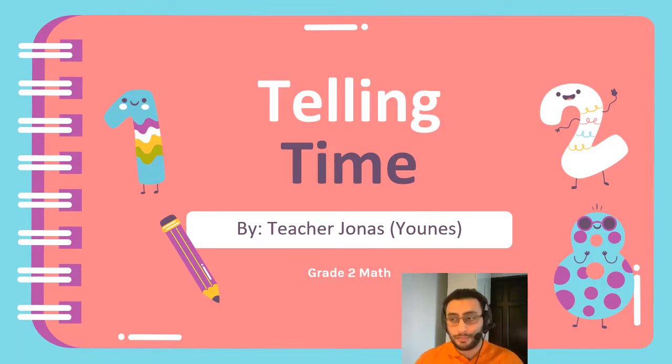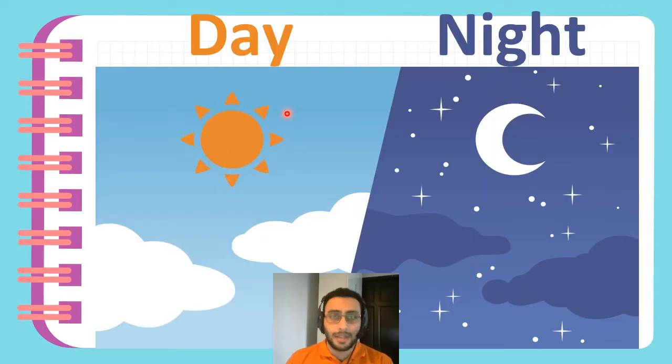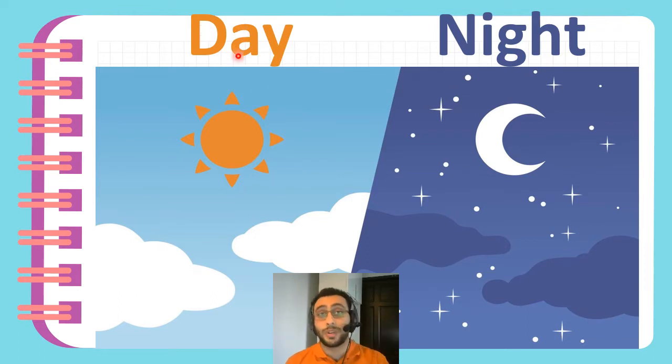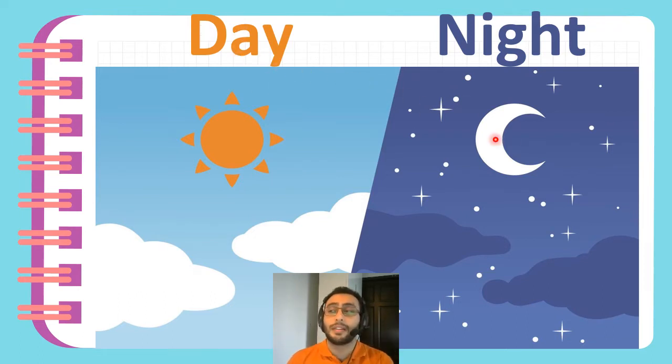As you remember, there are two times in a day. Daytime, which is when the sun is out and we can see the sun, and nighttime, when the sun is gone.